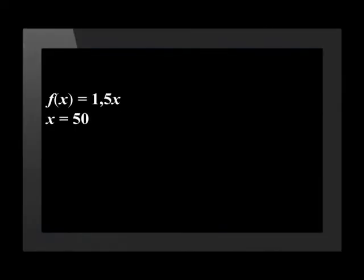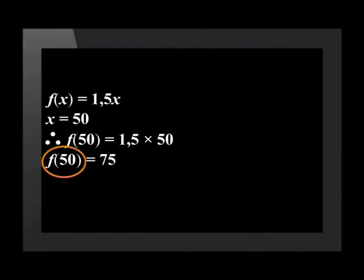Let's use this to calculate the cost of 50 units of electricity. x represents the number of units and has a value of 50. This means that the cost is equal to 1.5 times 50, which is equal to 75 rand. The great thing about functional notation is that we can display the values of the independent and dependent variables. The independent value is 50 units of electricity, and the dependent value is 75 rand.